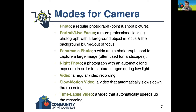The second mode is a portrait — or on some devices it's called live focus. This is a more professional-looking photograph because it's going to focus on an object in the foreground, meaning closer to the camera. The background — any objects further away from the camera — are all going to be blurred or out of focus. So it creates that more professional, editorial look where everything in the foreground is in very sharp focus but things behind it are kind of blurred.